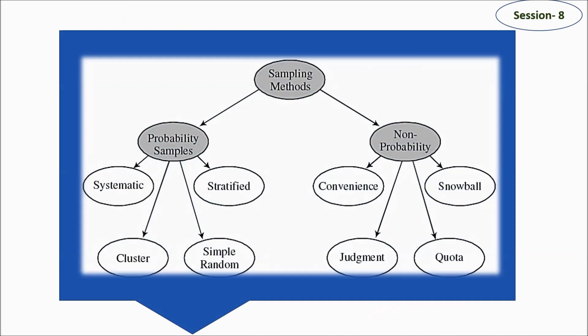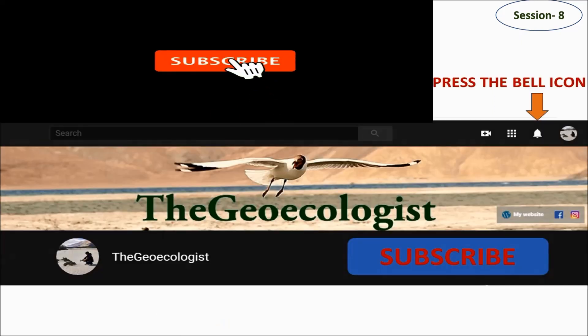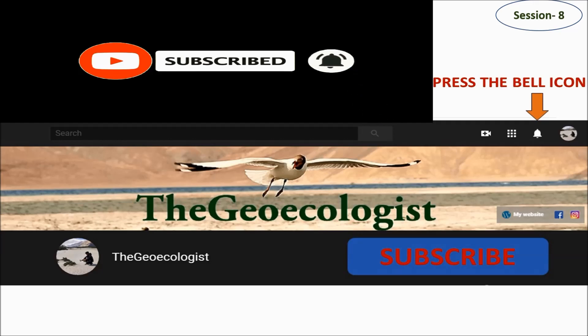To summarize, the entire family of sampling methods falls into two distinct categories: probability samples and non-probability samples. Under probability samples — which claim to be representative of the entire population — we have systematic, stratified, cluster, and simple random sampling. Non-probability samples are based on the researcher's judgment, convenience, or the specific context of the study, including judgment and quota sampling. Today we completed sampling techniques, sampling methods, their various types, and their advantages and disadvantages. Please like and subscribe to the Geoecologist channel and press the bell icon for updates. Stay tuned, stay safe. Thank you.